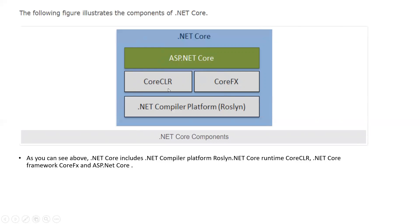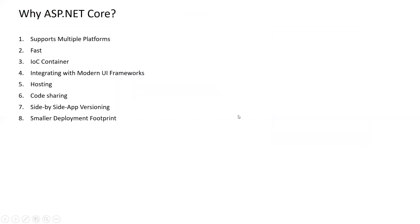In this ASP.NET Core we have different compilers: Core CLR and CoreFX. The components are .NET Compilers, .NET Core Runtime, .NET Core CLR, .NET Core Framework, and ASP.NET Core. This is the internal structure of .NET Core — it basically has ASP.NET Core, within which we have the Core CLR, Core Framework, and the .NET compiler platform named Roslyn.